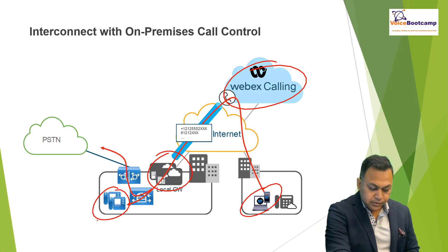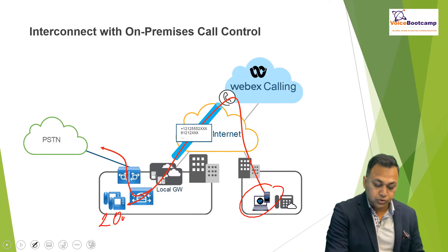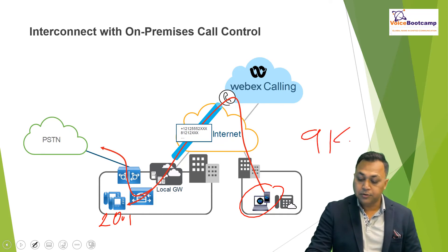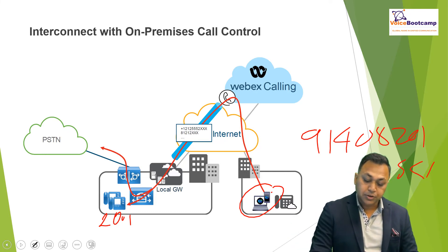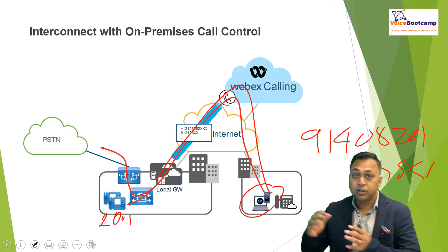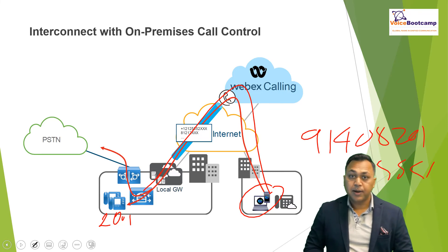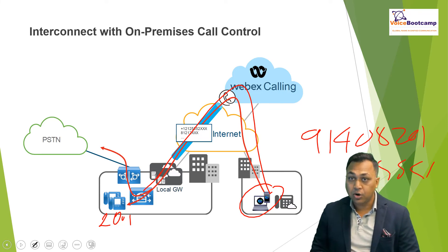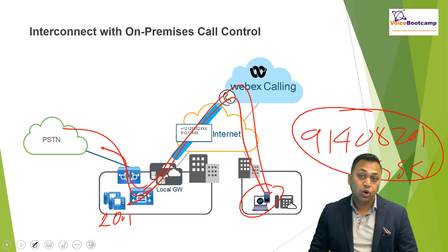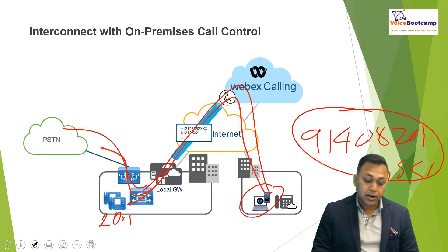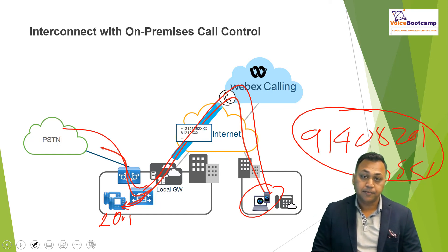In this scenario, a WebEx user would like to call, say, extension 2001, or a number like 914082015555 — just an example. Both of these call types can be routed from WebEx Calling via the trunk into the local environment, where the call will terminate on the Call Manager. Based on the tagging of on-net and off-net calls, off-net calls will be sent to the PSTN, while calls destined for an enterprise extension such as 2001 will be routed by Call Manager to that extension. The same trunk can be used for both purposes — inbound and outbound.